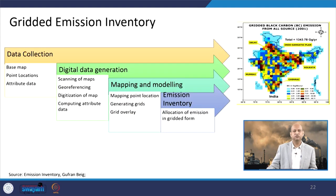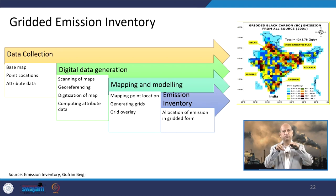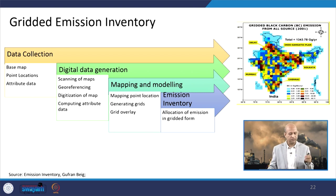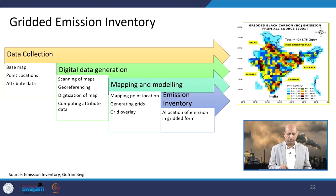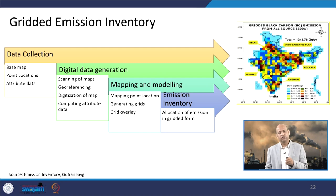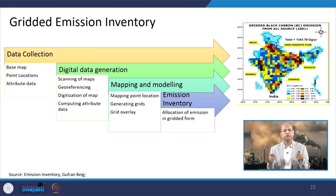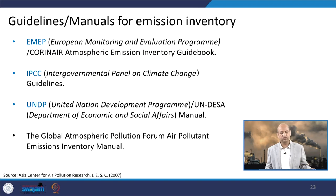Gridded emission inventory is important because different kinds of models need gridded emission inventories. The data collection involves basemaps, point locations, attribute data, digital data generation, scanning of maps, geo-referencing, digitization of maps, and computing attribute data. Then mapping involves generating grids, grid overlay, and allocating emissions for different grids. You can have total emissions, but if you want to distribute them in different grids you have to follow this kind of procedure.